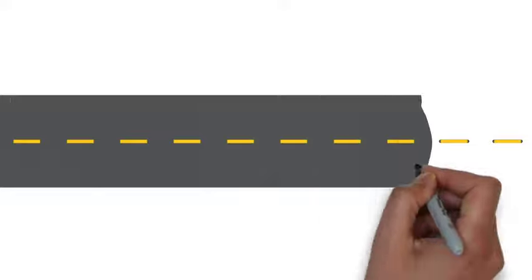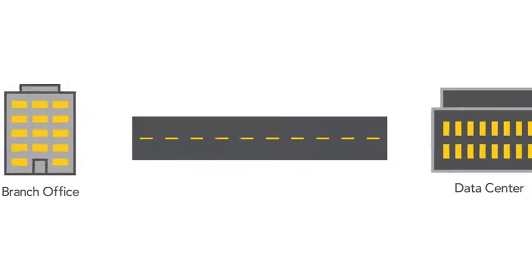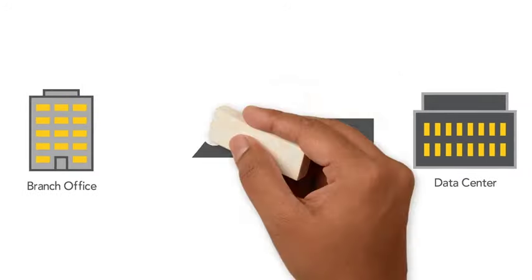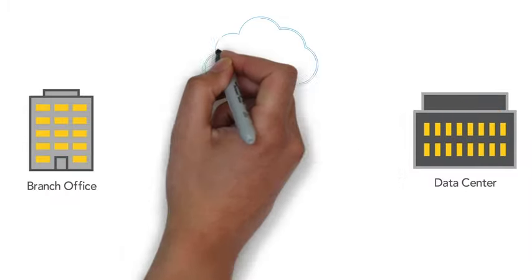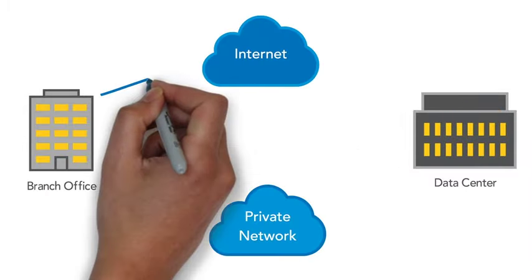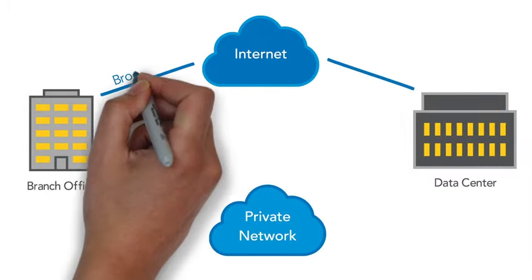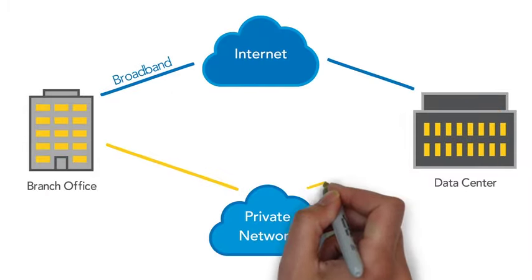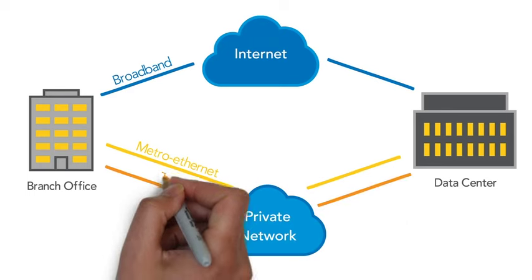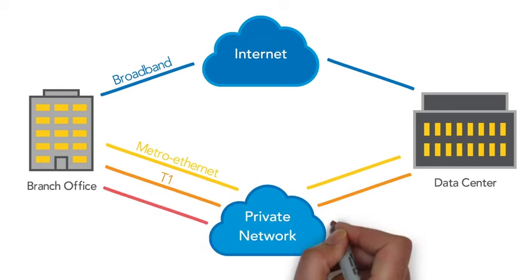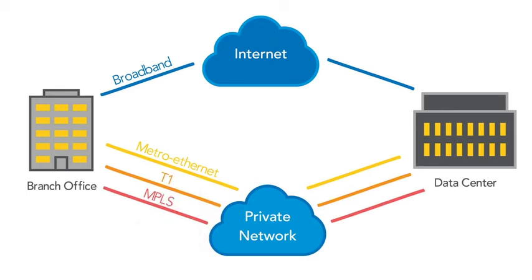Simply put, the WAN is the highway that interconnects enterprise resources to each other. Now, when we talk about the WAN, we talk about transports or methods of connectivity. Some examples are broadband, metro ethernet, T1, MPLS, and LTE.